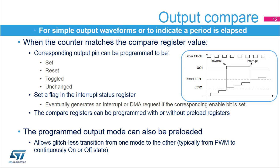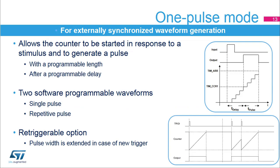The output compare mode can also be preloaded to allow glitchless transition from a PWM mode to a forced on or off state. One pulse mode is used to generate a pulse of a programmable length in response to an external event. The pulse can start as soon as the input trigger arrives or after a programmable delay. The compare one register CCR1 value defines the pulse start time, while the auto reload register ARR value defines the end of pulse. The effective pulse width is then defined as the difference between the ARR and CCR1 register values. The waveform can be programmed to have a single pulse or a continuous pulse train started by a single trigger.